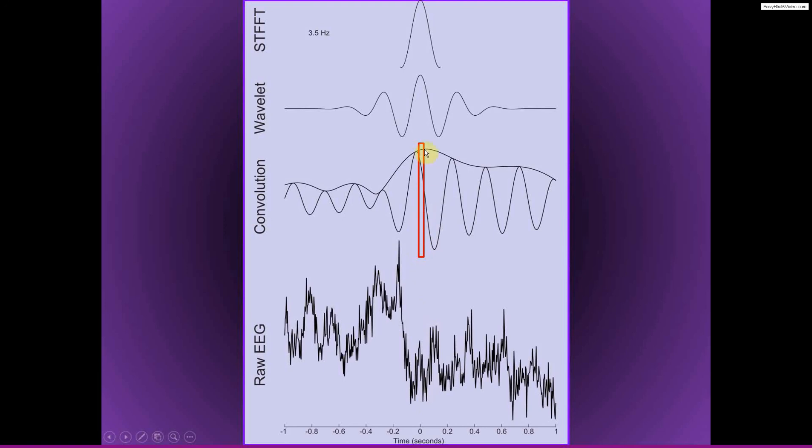Of course, you cannot get a 3.5 Hz, or even one cycle at 3.5 Hz within 20 ms. But inside this time window resulting from a wavelet convolution, because the result of convolution is continuous, then we can actually estimate the instantaneous power at 3.5 Hz within a window that is much smaller than a single cycle.